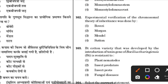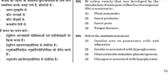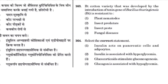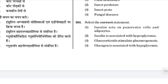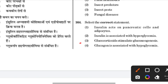Experimental verification of the chromosomal theory of inheritance was provided by Morgan. BT cotton variety was developed by introducing Bacillus thuringiensis genes for insect resistance. Glucocorticoids stimulate gluconeogenesis — the answer is 3.